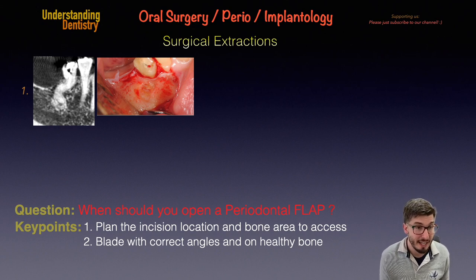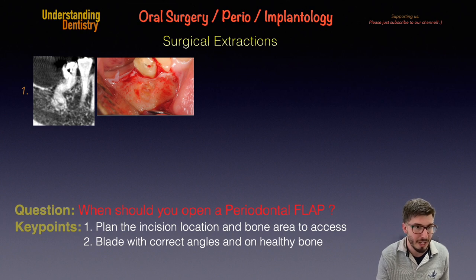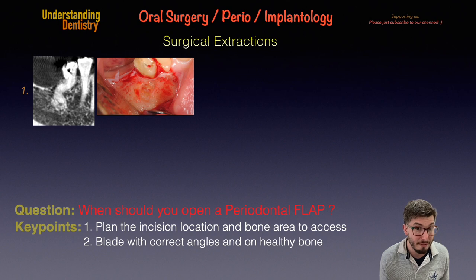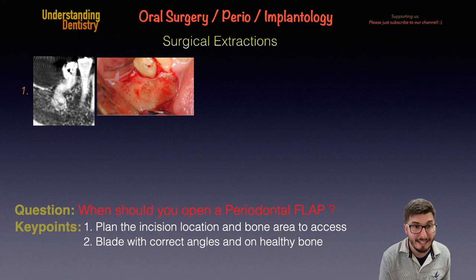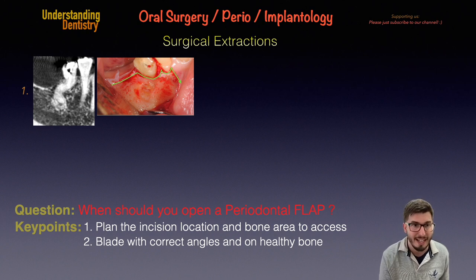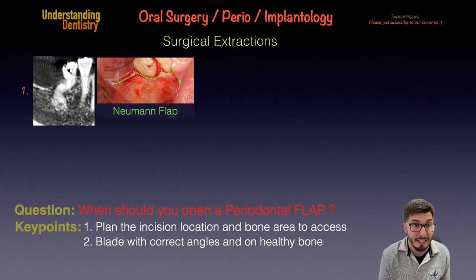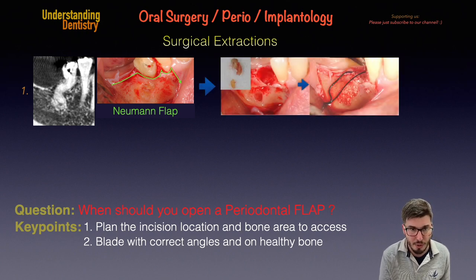Now let's see cases where a releasing incision was needed. Here is a surgical extraction — a tooth with a failing root canal and failing post with symptoms that had to be extracted. The root was also curved toward the buccal direction, and after opening the flap we can see the apex through the buccal plate. This is the Neumann flap — a triangular flap with one releasing incision — which allowed us to perform the surgical extraction.